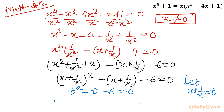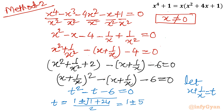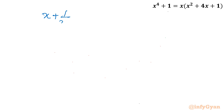Applying the quadratic formula to t² - t - 6 = 0: t = (1 ± √(1 + 24)) / 2 = (1 ± 5) / 2. So t = 3 or t = -2. Back-substituting: x + 1/x = 3 gives x² - 3x + 1 = 0, and x + 1/x = -2 gives x² + 2x + 1 = 0.